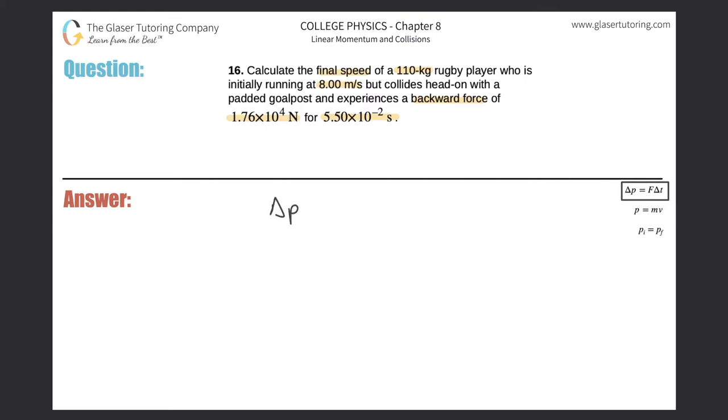So it says that the impulse, or a.k.a. change in momentum, will equal the force applied multiplied by the time in which that force is applied. So I can expand this change in momentum to be basically the mass multiplied by the final velocity minus the initial velocity. And that's equal to force times time.